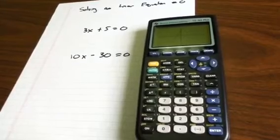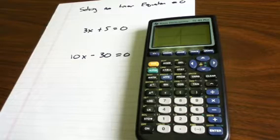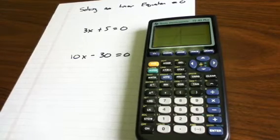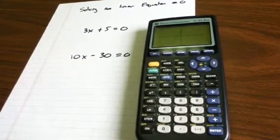Now what it asks for is the left bound, the right bound, and then there's a word that says Guess, and it's going to give you the solution. What it's asking for is the left bound of the x-intercept, the right bound of the x-intercept, then you just hit Enter the third time and it's going to give you the solution.